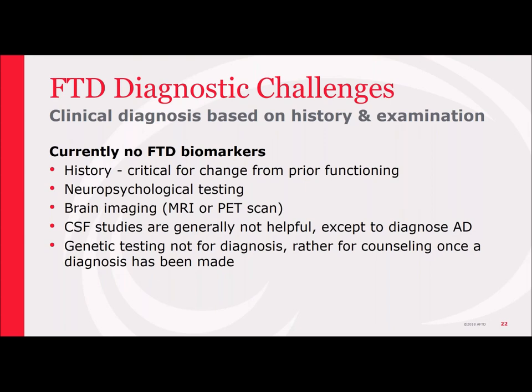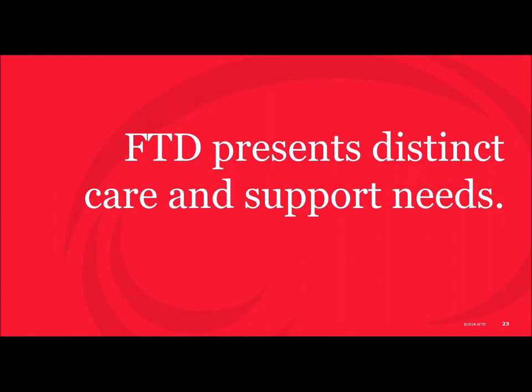The clinical diagnosis is made based on the person's history and examination. There really aren't any biomarkers — people can't take a blood test or use any individual test to confirm FTD. The evolution of changes that the individual and their family are noticing is really important to bring to the doctor — the change from prior functioning is often the key indicator. Neuropsychological testing can identify parts of the brain that are intact and where there's an unusual decline. Brain imaging, whether MRI or PET scan, is increasingly important. CSF studies are generally not helpful in diagnosing FTD except to rule out Alzheimer's disease. Genetic testing is not done for diagnosis, but if a person is diagnosed and symptomatic, it might be helpful for family understanding and counseling.